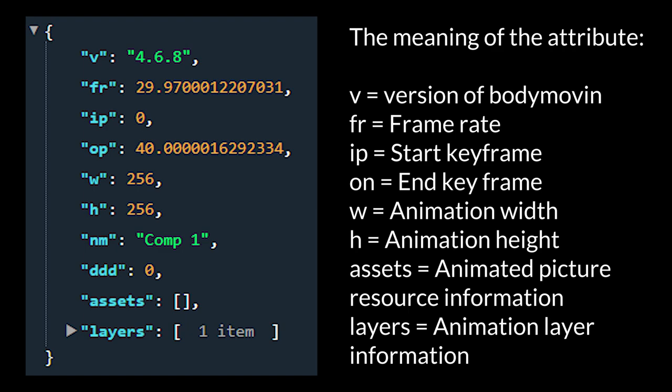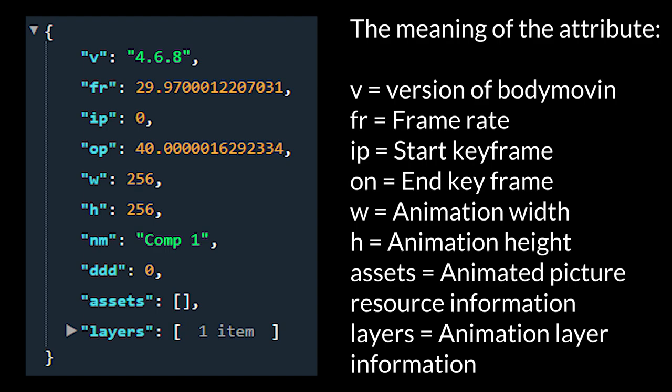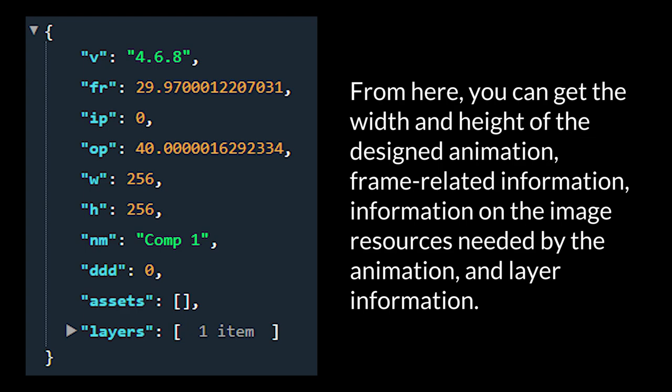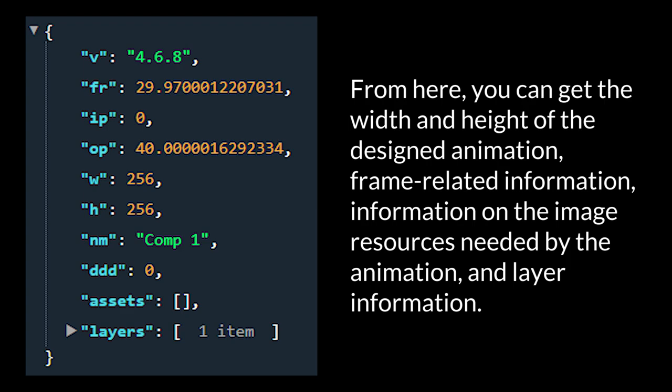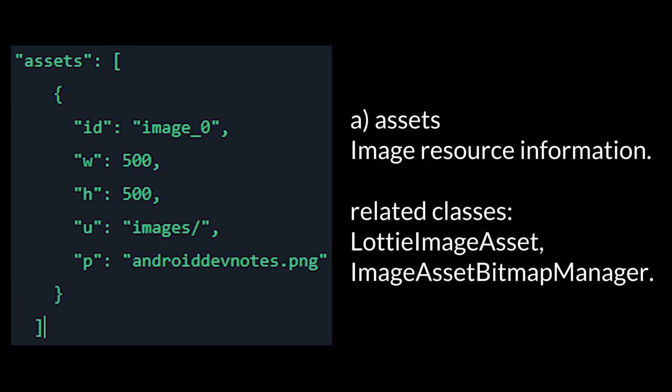The outermost layer attributes are: V — Version of Bodymovin; FR — Framerate; IP — Start Keyframe; ON — End Keyframe; W — Animation Width; H — Animation Height; Assets — Animated Picture Resource Information; Layers — Animated Layer Information. From here you can get the width and height of the designed animation, frame-related information, information on the image resources needed to render the animation, and layer information. Under Assets (Image Resource Information), the related class is ImageAssetBitmapManager.